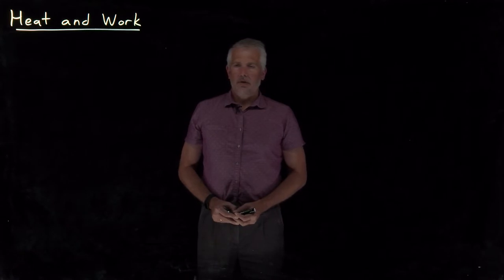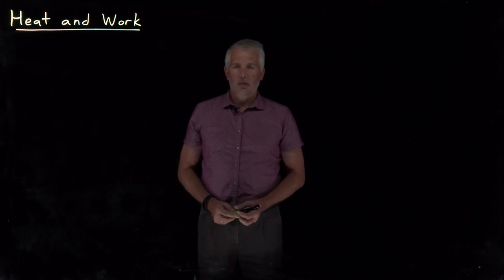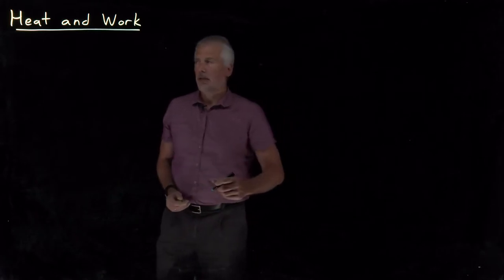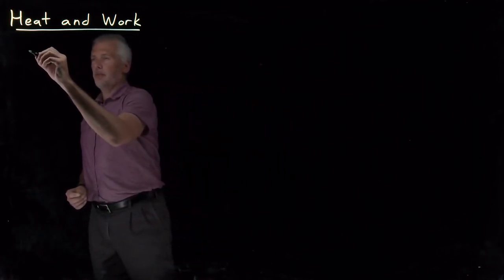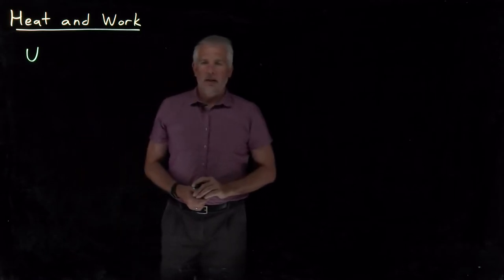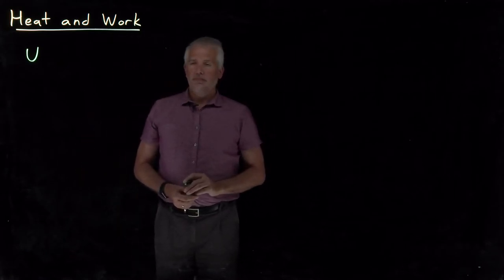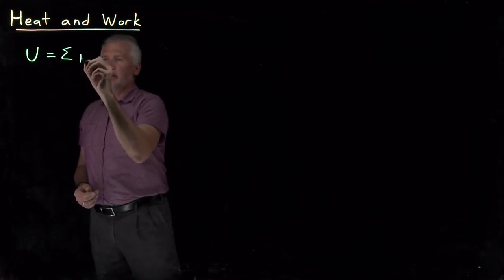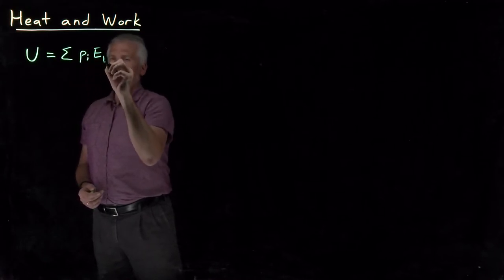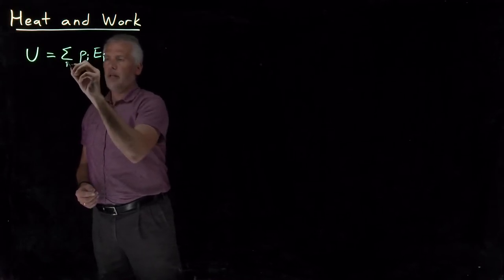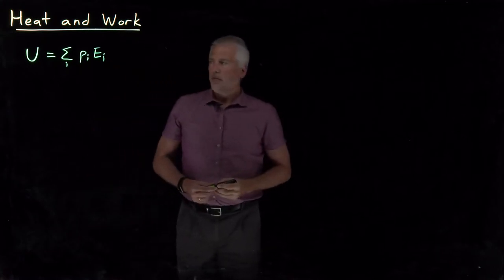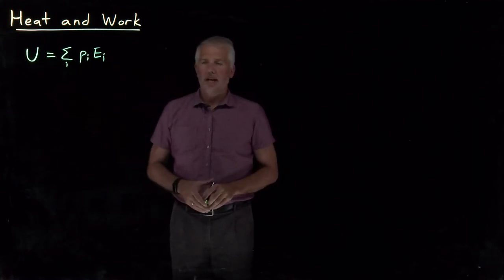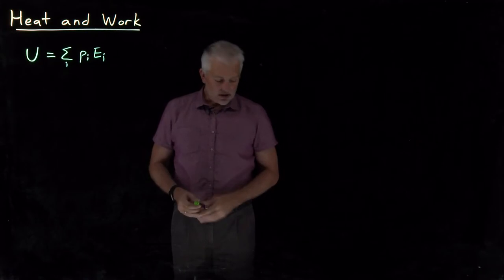We've met several different thermodynamic variables, but now it's time to start talking about what those look like when we think of them as differentials. We've talked about the internal energy U, and one of the things we know about it is that we can write it in a particular way — that's how we first define the internal energy, as an average of the microscopic energies of the system.